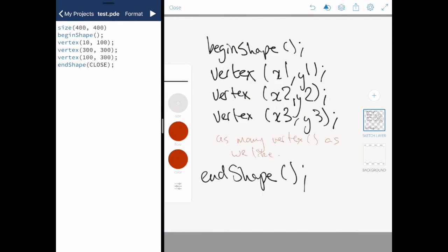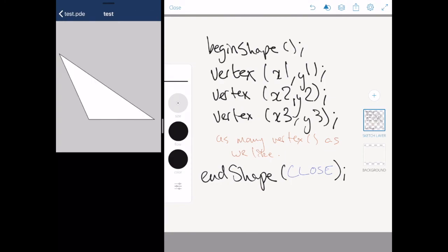And also remember by adding CLOSE to the end of endShape, all in capital letters, that will close off the shape that we draw. So there we have it, a very quick introduction to how to use beginShape and endShape. See you later.